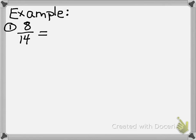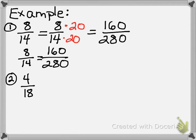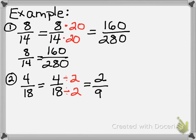My first example is eight-fourteenths. Let's find an equivalent fraction by multiplying. I'll choose to multiply by twenty — you can pick any number you want. I multiply eight by twenty and fourteen by twenty, giving me 160 over 280. So my proportion is: eight-fourteenths equals 160 over 280. My next example is four-eighteenths. I'll divide top and bottom by two, giving me two-ninths. My proportion is: four-eighteenths equals two-ninths.